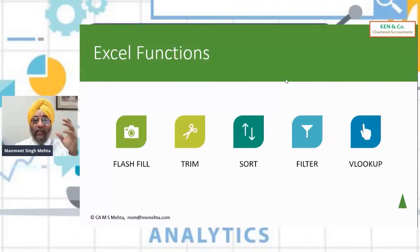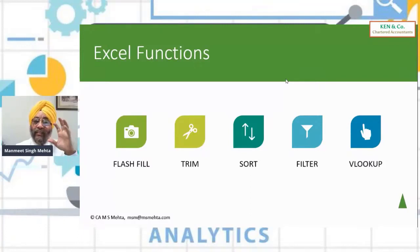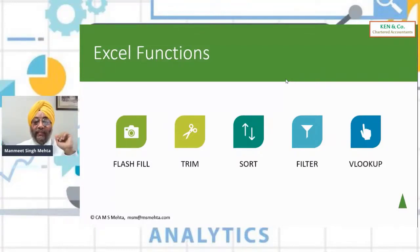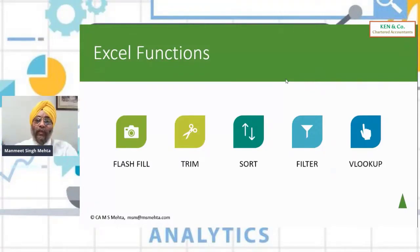We'll also look at how we can sort the data. Sorting is a very important step in analyzing data. Then you can select data according to criteria using filters. Filters have evolved in every version of Excel and today it's a very powerful function. And then we look at the star function of Excel: VLOOKUP. With VLOOKUP you can find something and get a result from somewhere else - look up for a value and have the output. These functions all help us clean the data.